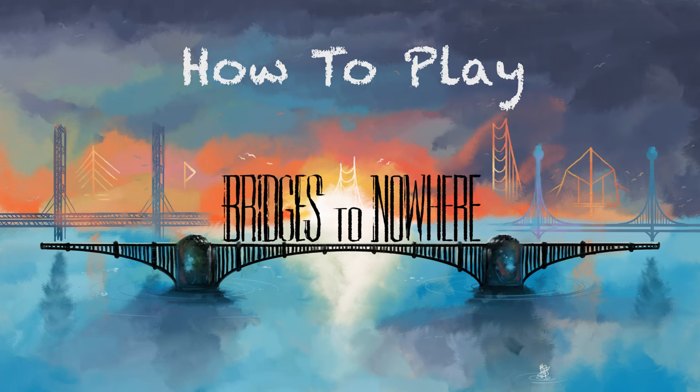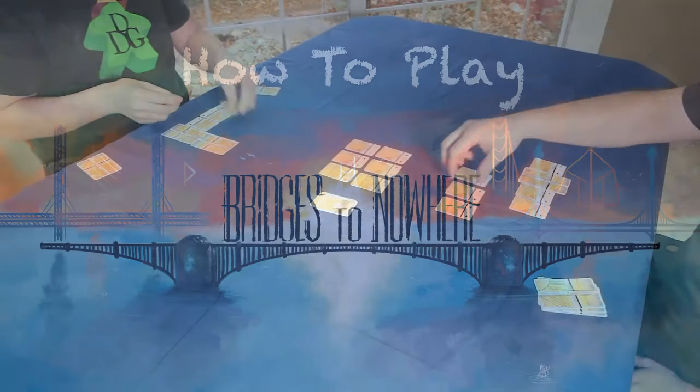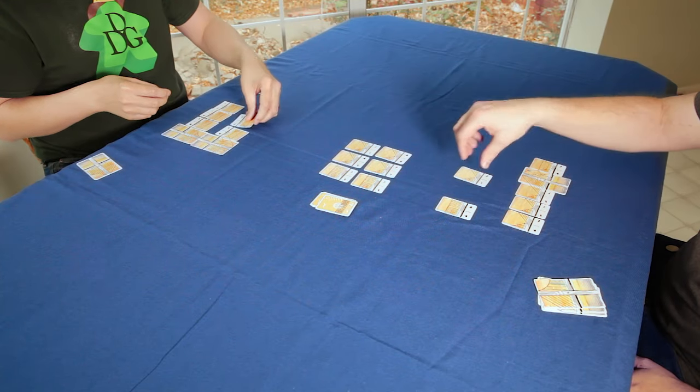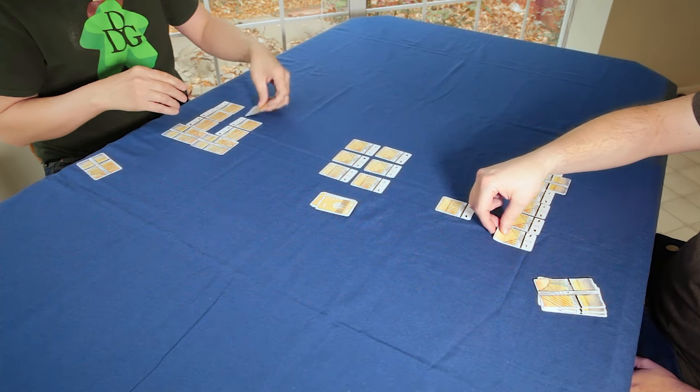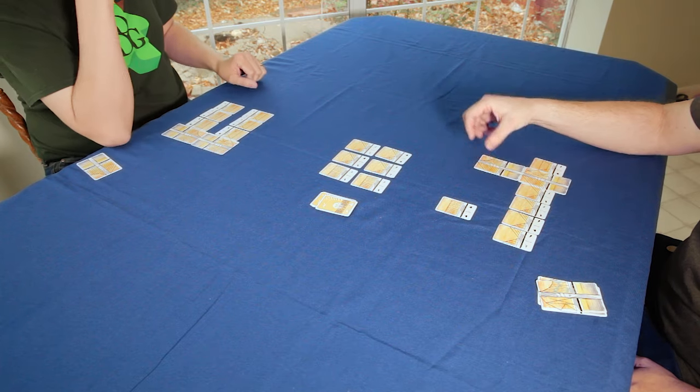In Bridges to Nowhere, players compete to build the highest scoring bridge. During each round, players will draft three bridge cards, then build those cards onto their bridge. At the end of the fourth round, players score their bridges and the highest score wins.